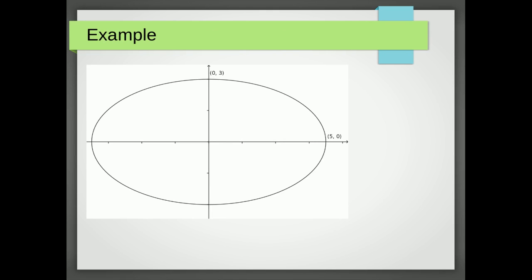So here is an example. We've got an ellipse, it cuts the x-axis at 5 and the y-axis at 3. And we know that the form of the equation of an ellipse is x squared over a squared plus y squared over b squared equals 1,